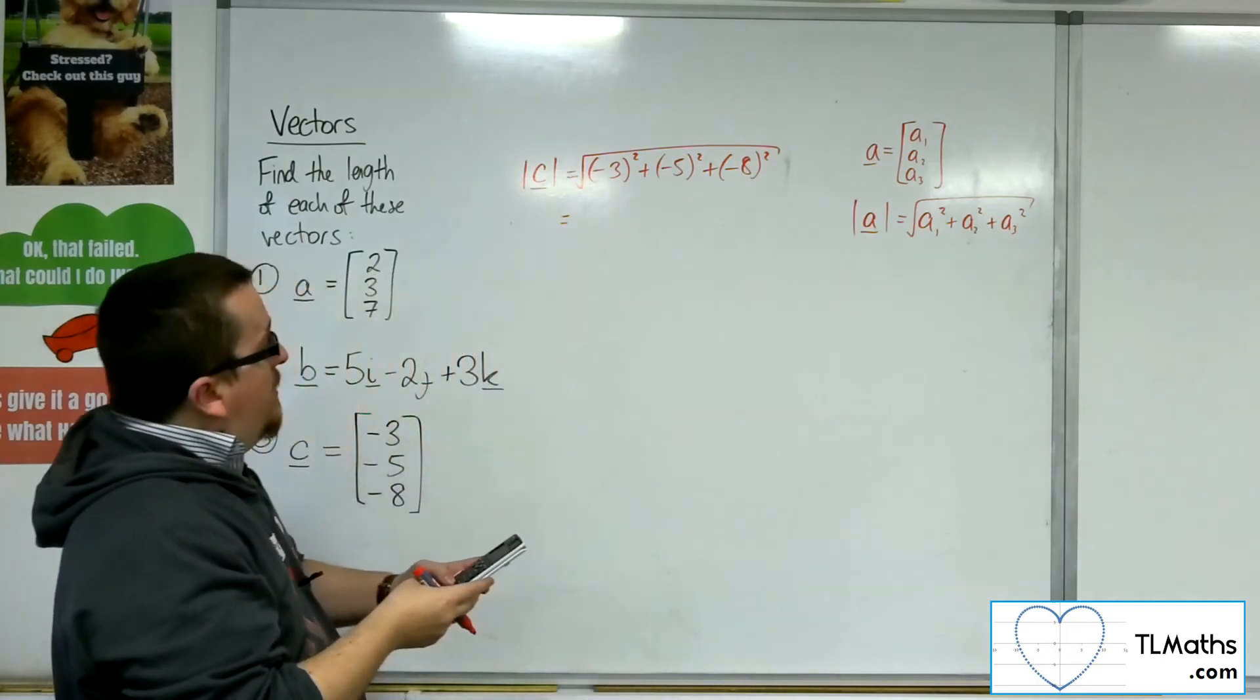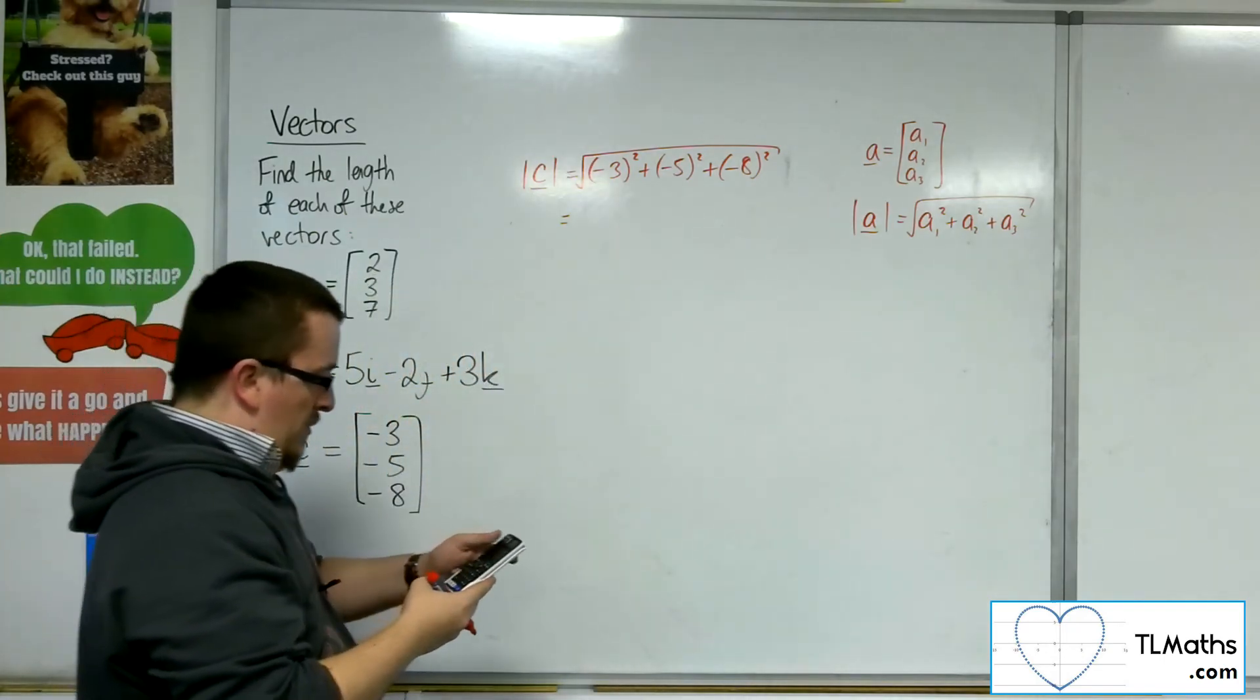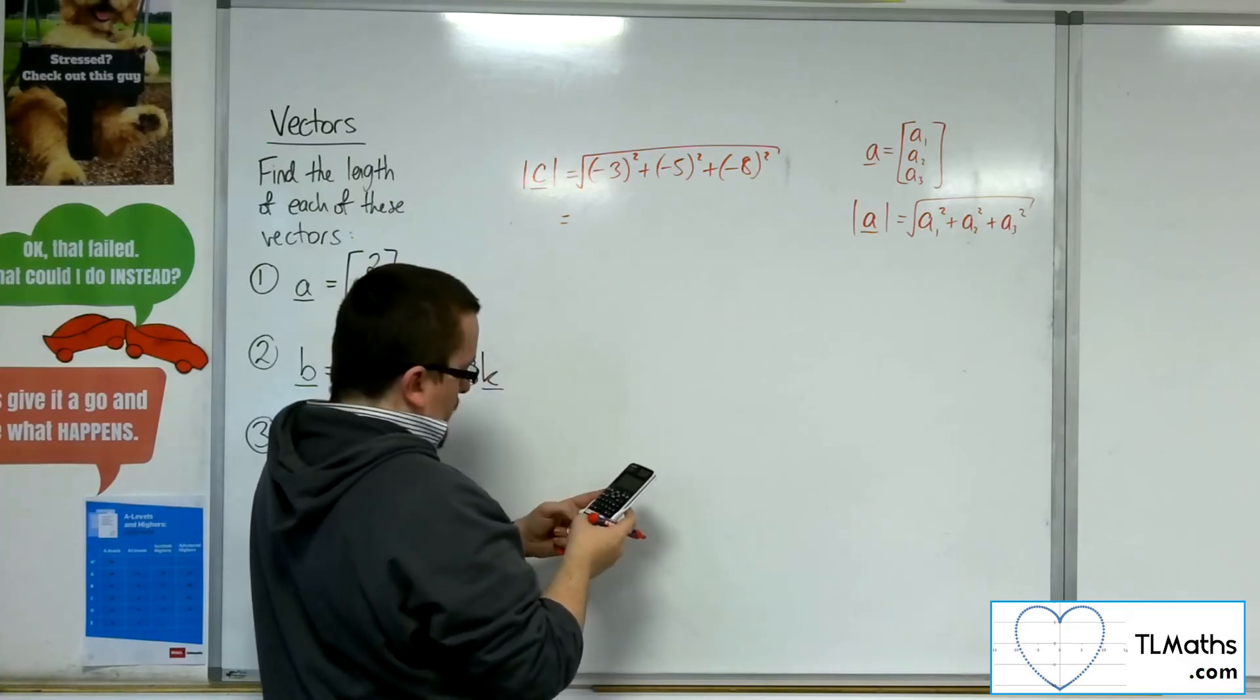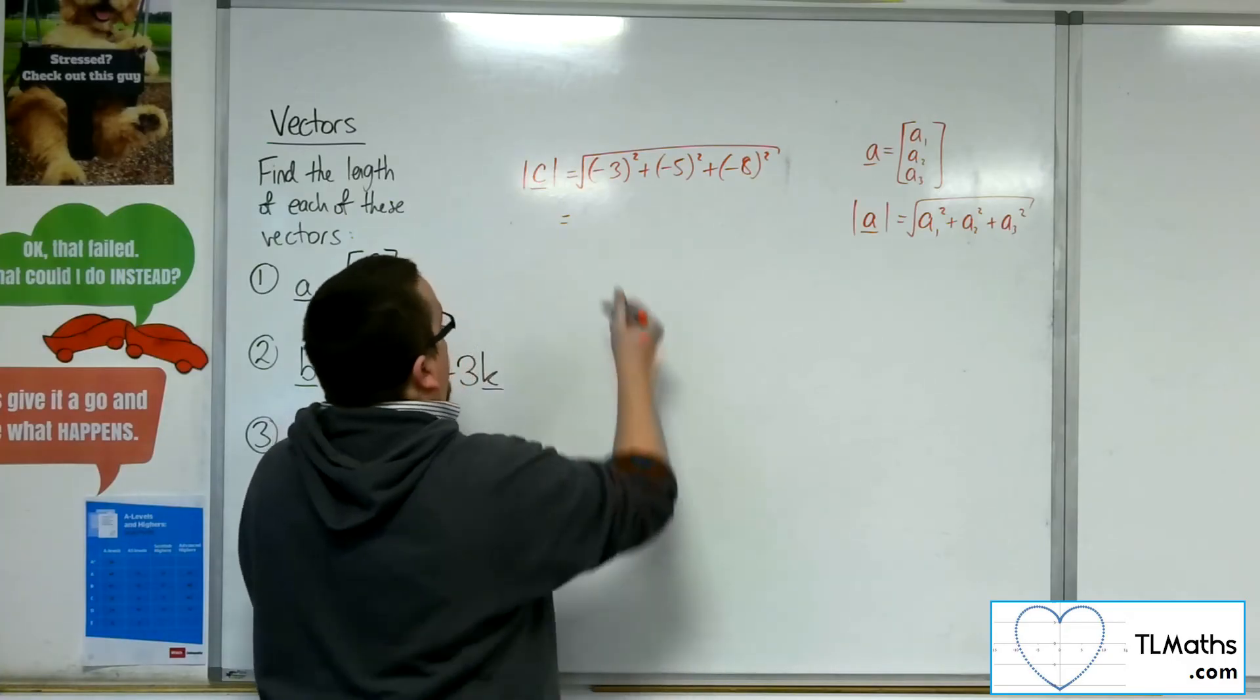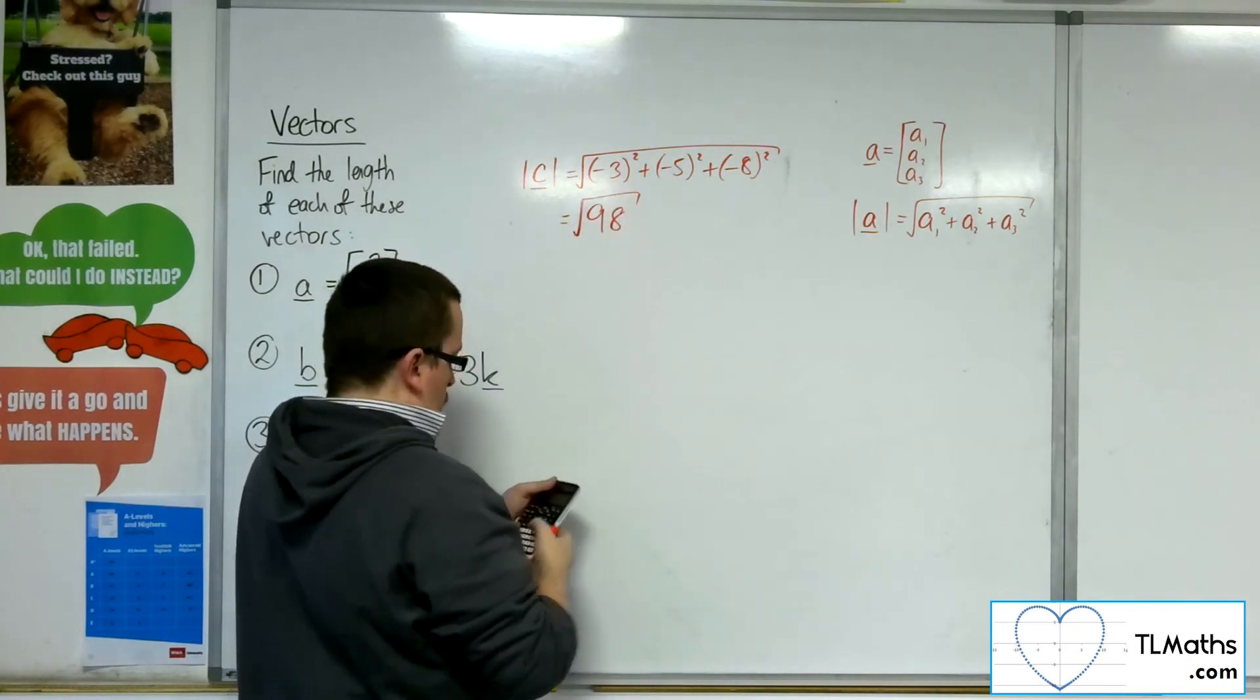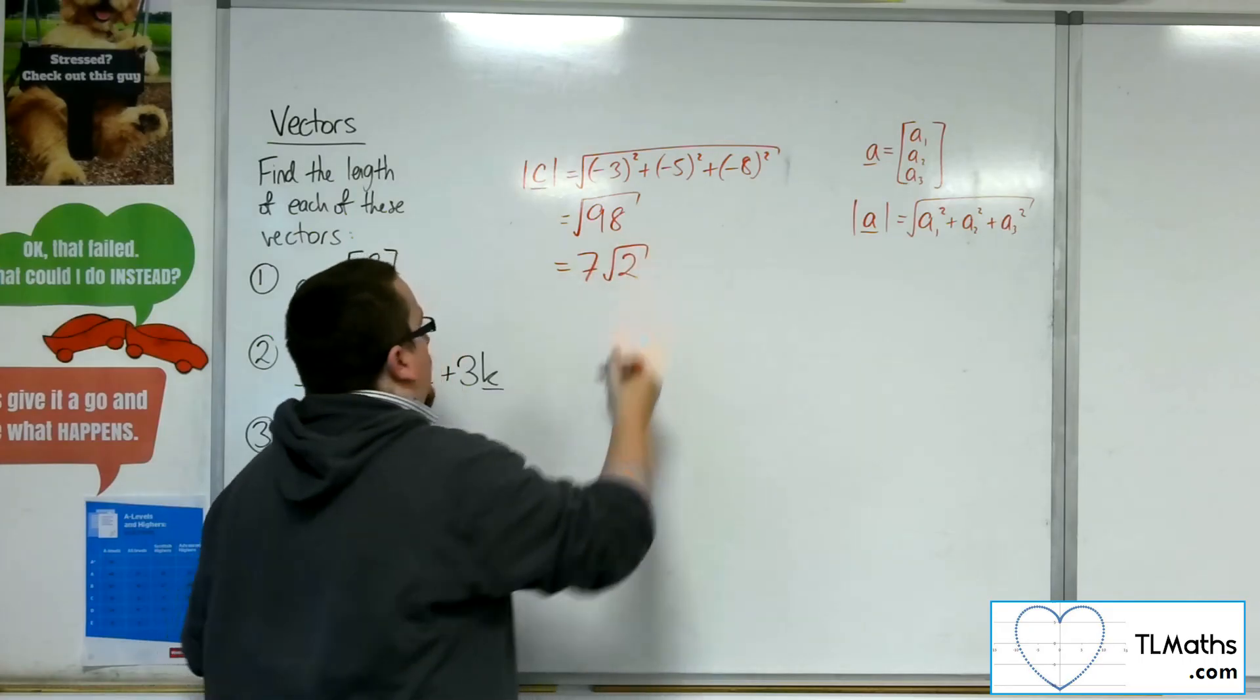So, it's the square root of 9 plus 25 plus 64, and so, well, you get 7 root 2 as the simplified version. So, square root of 98, which is 7 root 2.